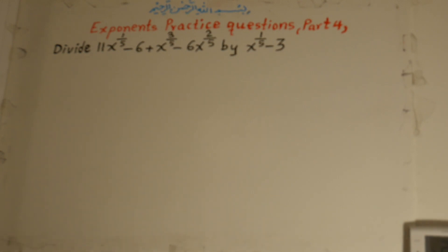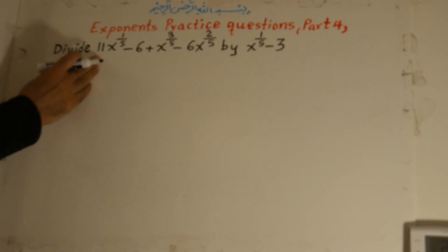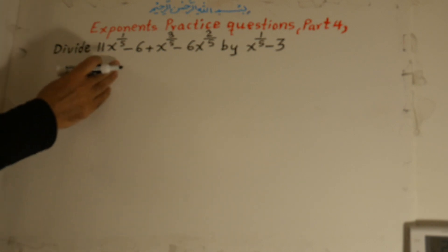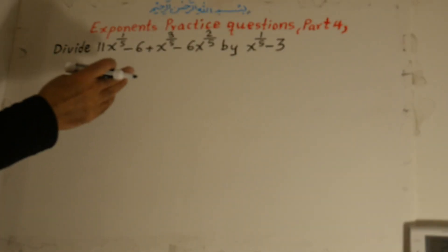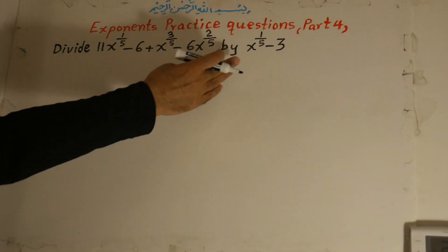Hi, welcome to mathematics class. The topic of our lesson is exponents practice questions, part 4. Divide 11x to the power of 1 over 5 minus 6 plus x to the power of 2 over 5 minus 6x to the power of 2 over 5 by x to the power of 1 over 5 minus 3.